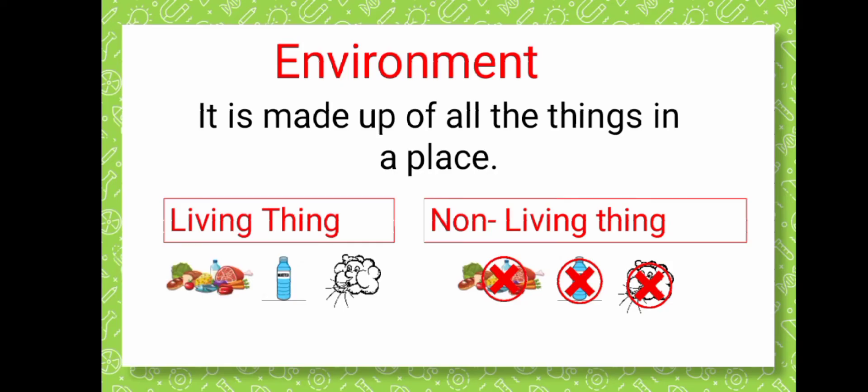So the environment is made up of all things in a place, like living things that need water, eat food, and need air, and non-living things that don't eat food, drink water, or need air.